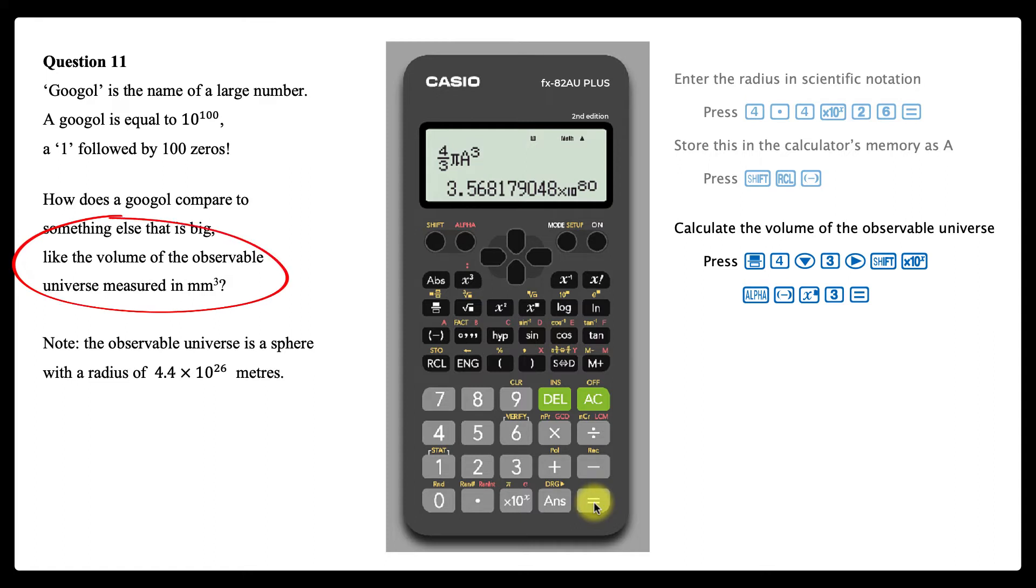To convert this volume to cubic millimeters, this answer needs to be multiplied by 10 to the power of 9, being the number of cubic millimeters in a cubic meter.